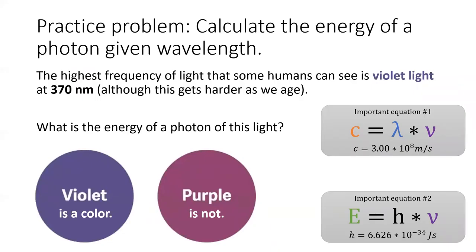Time for practice. Young people are able to perceive violet light all the way down to 370 nanometers. What is the energy of a photon of this light? Pause the video and see if you can answer this one yourself.